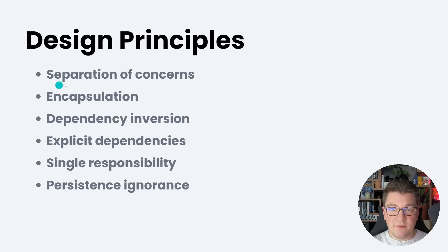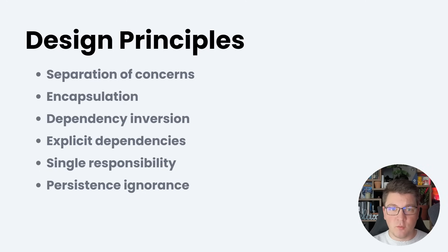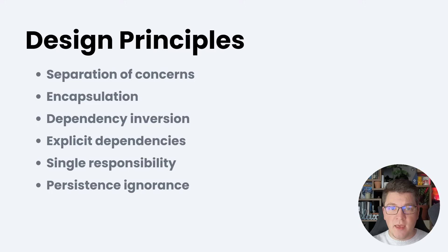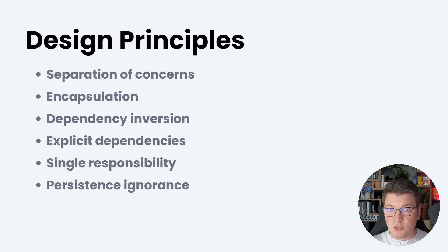For example, we have the separation of concerns principle, which states that we should structure our system such that each component has a specific responsibility. When we think about this on the architectural level, clean architecture promotes this by placing the business logic in the domain layer, the use cases as another concern in the application layer, and we try to implement the use cases to be independent of external concerns by moving that responsibility to the infrastructure layer.